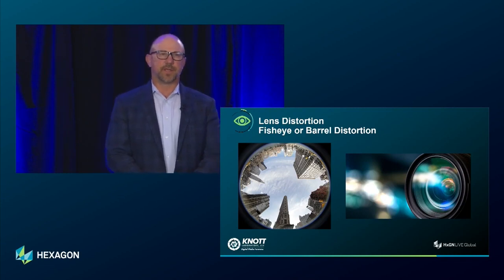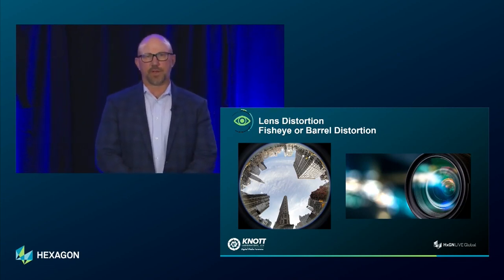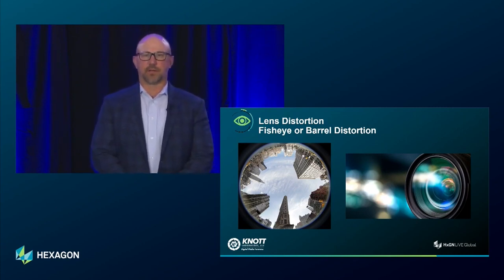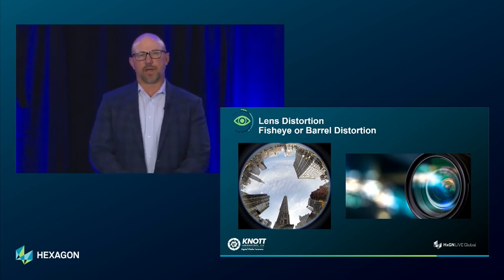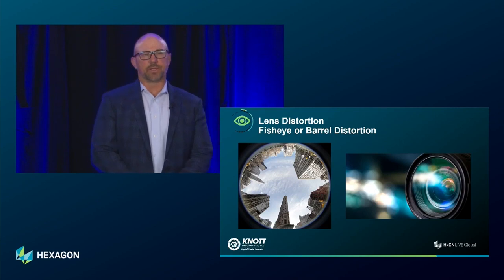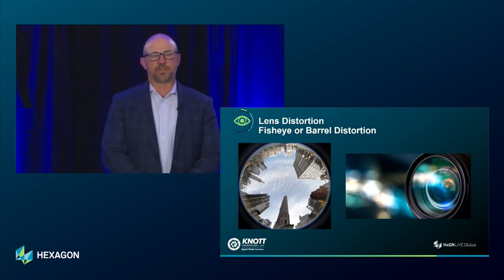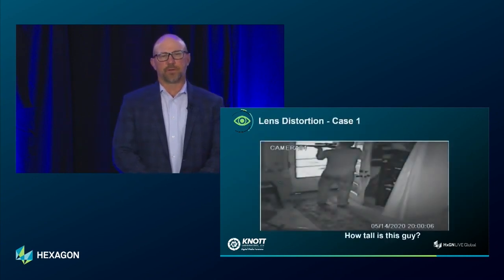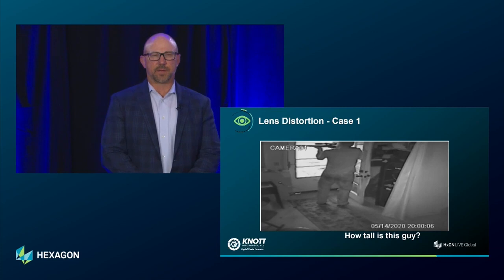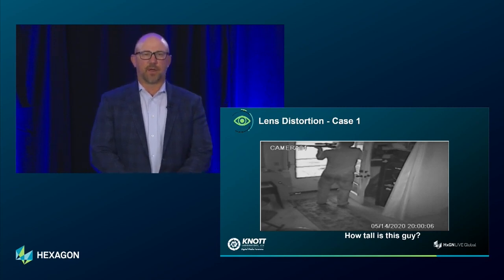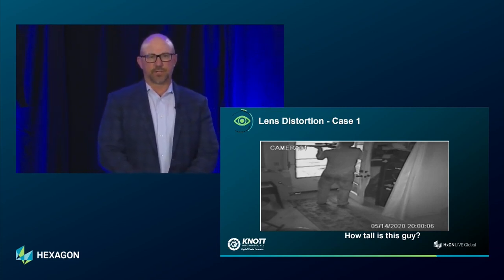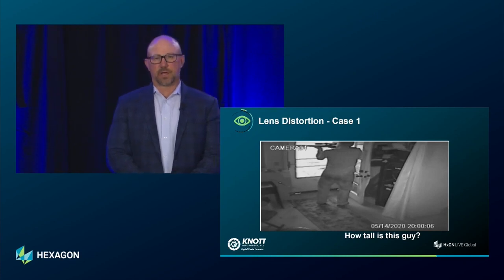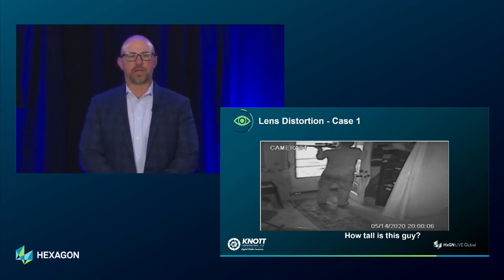Lens distortion is the curvature of the lens of any camera or video camera. Certain cameras have various lens curvature that's known; other cameras we don't necessarily know, and we've got to figure it out. That lens distortion creates a fisheye or barrel distortion, as shown in this photograph. I'll walk through a couple of cases we've worked on and show how lens distortion — and the subsequent topics — was applied to these situations.